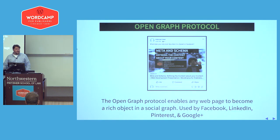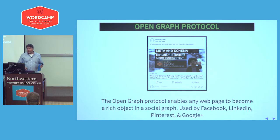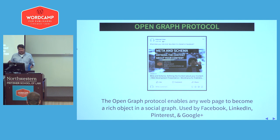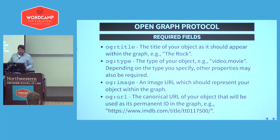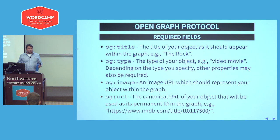Facebook started the Open Graph protocol to enable web pages to become rich objects in a social graph — so no longer is this just a web page, it is actually a book, article, address, or whatever else. Facebook open-sourced this, and since then most of the world has adopted it: LinkedIn, Pinterest, Google+. There are four required fields: title, type, URL — which was the canonical URL before canonical URL tags existed — and an image. This was kind of the sea change on the internet for content creators, where basically every piece of content that needs to be shared on the social graph requires an image.